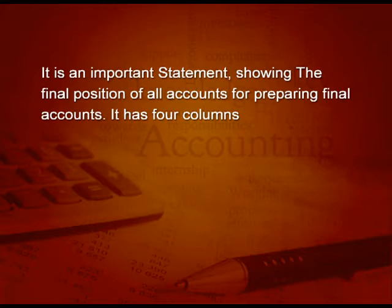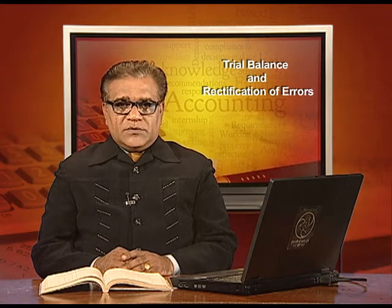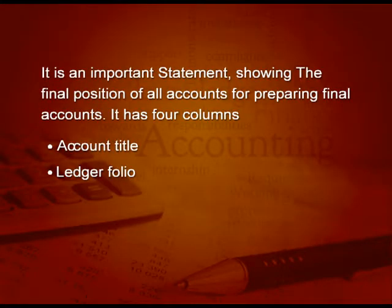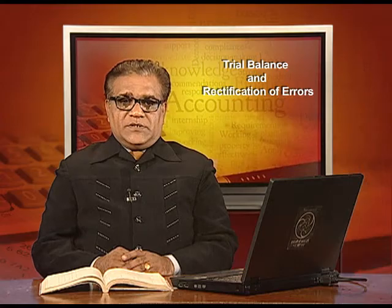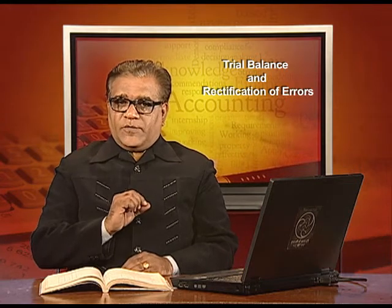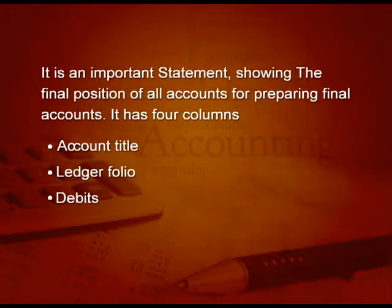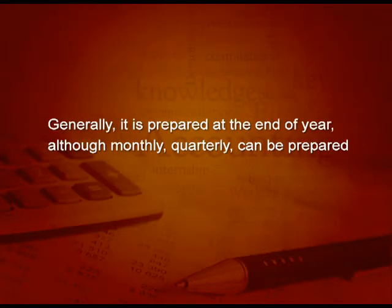Trial balance has four columns: first, account title where we write the name of the account; second, ledger folio where we write the page number of the ledger from where the balance is noted down; and then one column for debit and one column for credit. Generally it is prepared at the end of the year, although it can also be prepared monthly or quarterly.